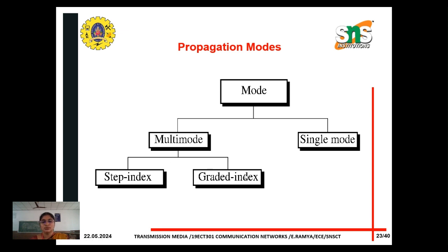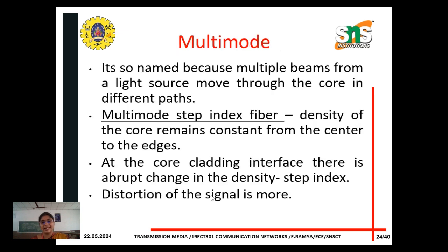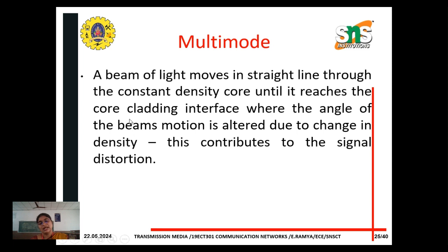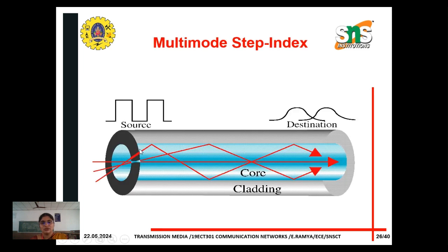Propagation mode has two types: multi-mode and single mode. Multi-mode has step index and graded index. In multi-mode step index fiber, the density of the core remains constant from the center to the edges. A beam of light moves in a straight line through the constant density core until it reaches the core-cladding interface, where the angle of the beam's motion is altered due to the change in density.